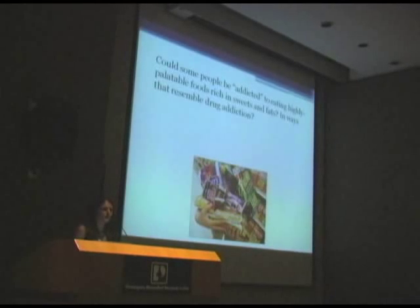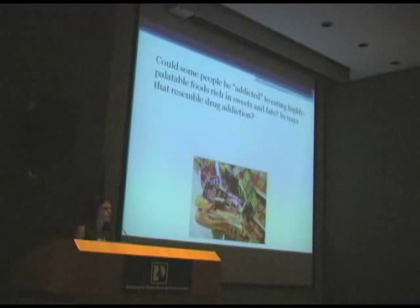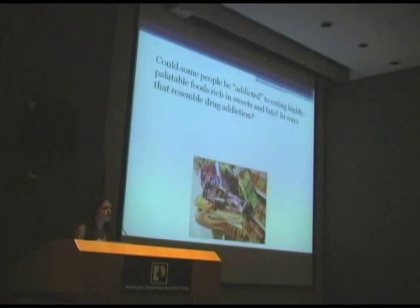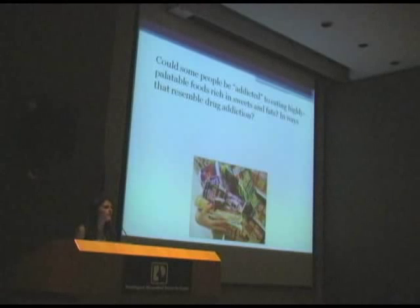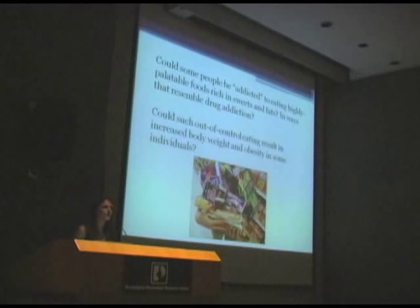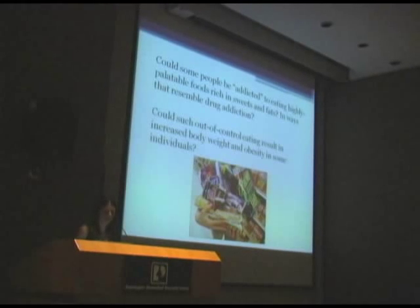The question that's arisen in my lab and others is: we know there's this overlapping brain circuitry among drugs and food, and we know there are these criteria to diagnose someone as being addicted to drugs. What if people — particularly people who are obese — could be addicted to food in the way that some people become addicted to drugs? If you're addicted to food, that out-of-control type of eating could be contributing to obesity and could be resulting in increased body weight that may be out of the control of the individual to some extent.